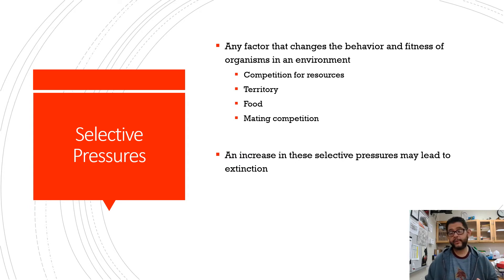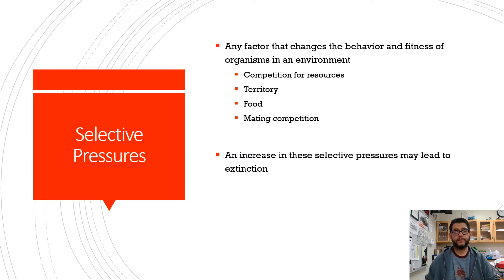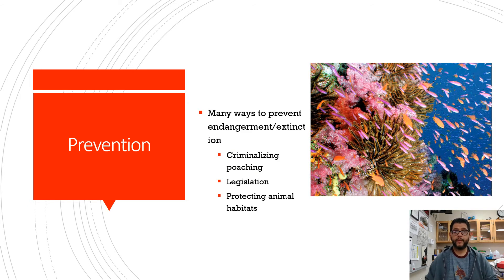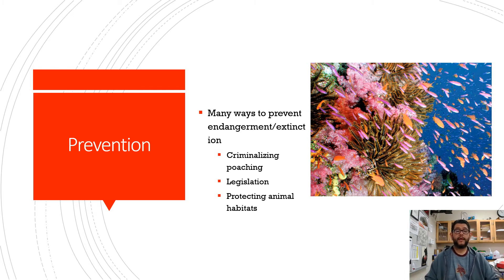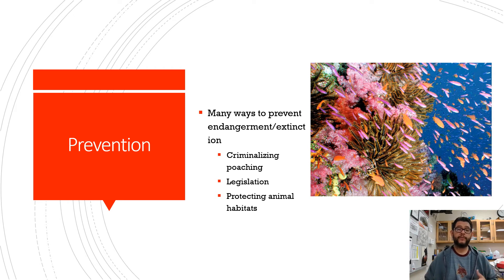There's always a natural extinction rate, but an endangered or extinct species can't really match up to those selective pressures. Many ways to prevent these are through criminalizing poaching so that people don't hunt or take whatever they want, legislation to block some of those things, and protecting animal habitats — probably the biggest one, because the larger the habitat you protect, the more species, and more biodiversity is better for species in the long term.